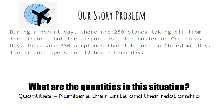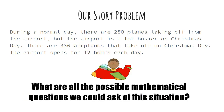Now think about what are the quantities in this situation. Quantities mean numbers, their units, and their relationship. This time I'm going to read it again for our second read — read out loud with me. During a normal day there are 280 planes taking off from the airport, but the airport is a lot busier on Christmas Day. There are 336 airplanes that take off on Christmas Day. The airport opens for 12 hours each day. What quantities do you see? Pause this video so you can look. I saw 280 planes on the normal day, 336 airplanes on Christmas Day, and a time period of 12 hours open each day.